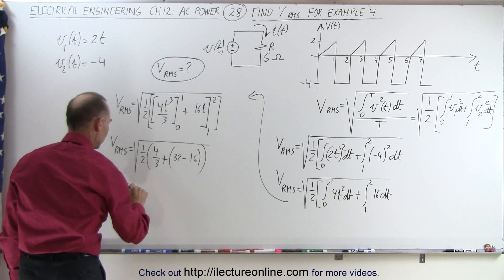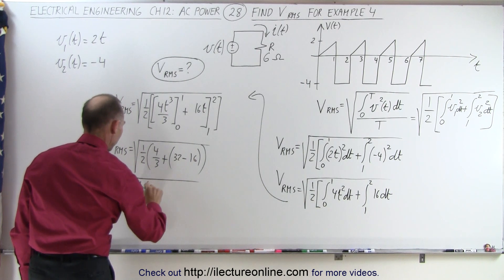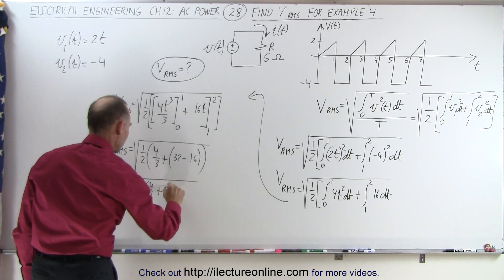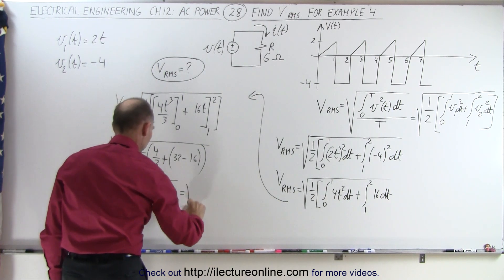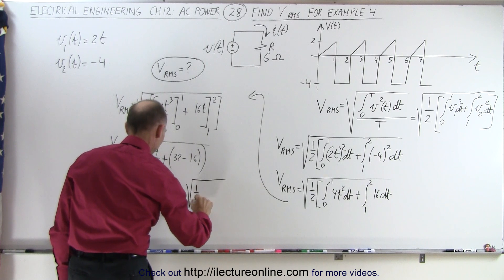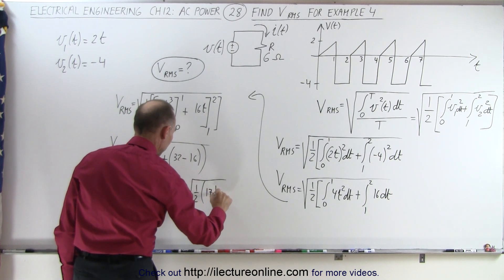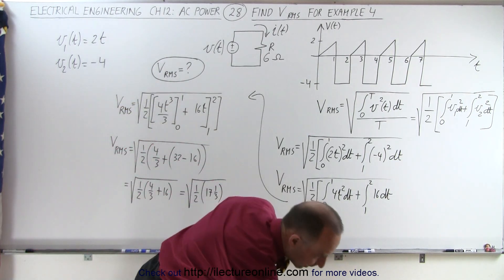So this is equal to the square root of 1 half times 17 and 1 third. And now let's go ahead and resort to a calculator.